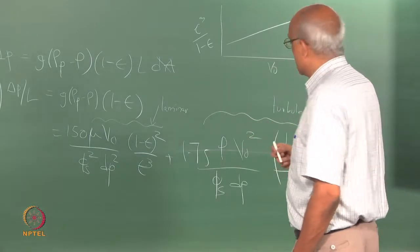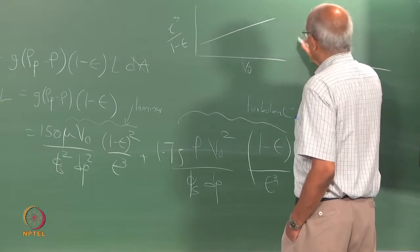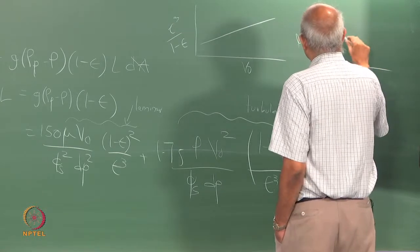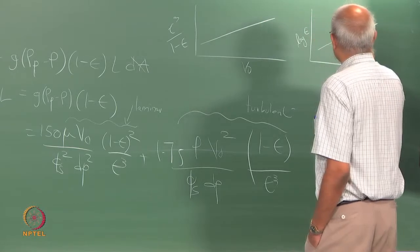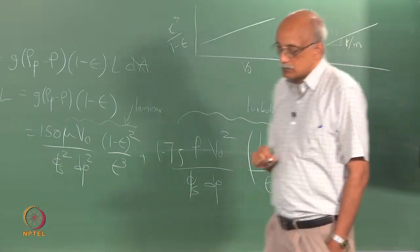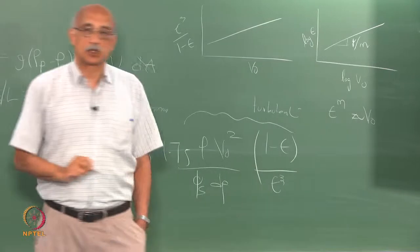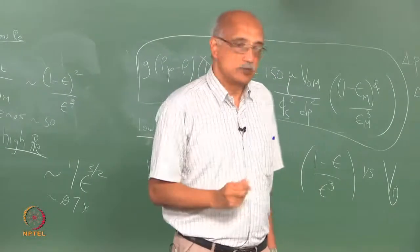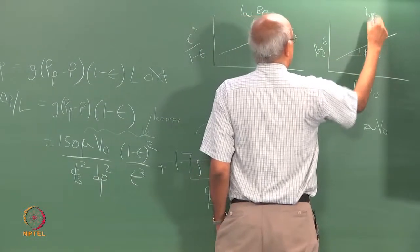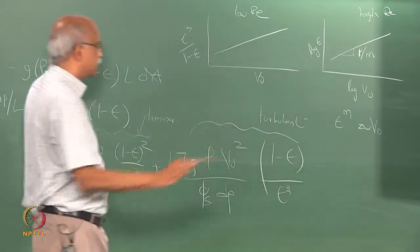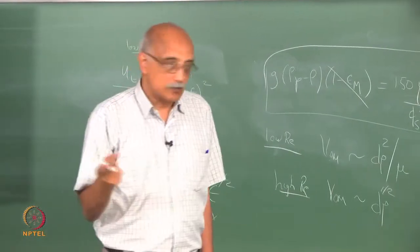Under high Reynolds number conditions, you plot log V0 versus log epsilon and get a slope equal to 1/m, so epsilon to the power m goes as V0, where m is an exponent determined experimentally. For low Reynolds number conditions the relationship is linear; for high Reynolds number conditions it is exponential. The value of m varies from about 4.5 to 2.6 as Reynolds number increases from 0.1 to 10 cubed.